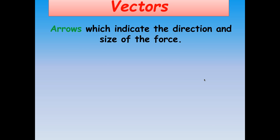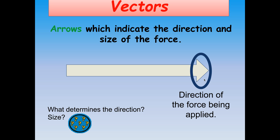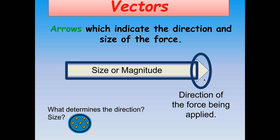A vector is an arrow which indicates the direction and size of a force. The arrow illustrates the direction that the force is going and also the size of the force being applied. The direction of the force is indicated by the direction the arrow is pointing, and the length of the arrow indicates the size, or magnitude, of the force — how big the force is that's pushing or pulling against something.